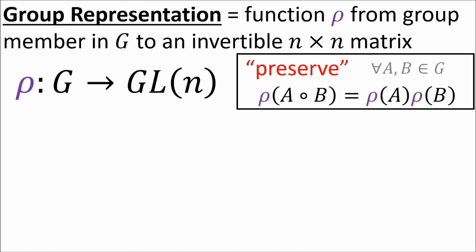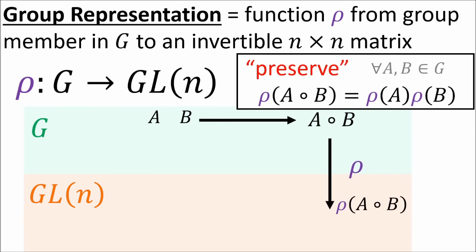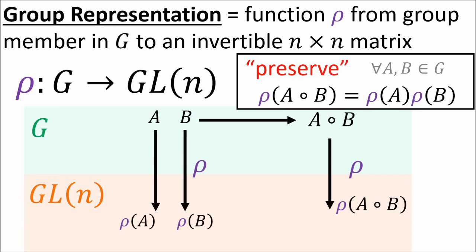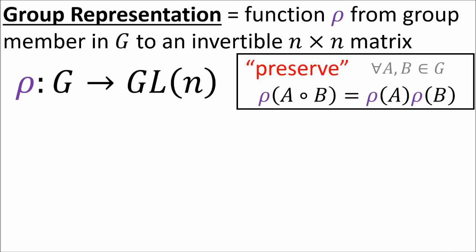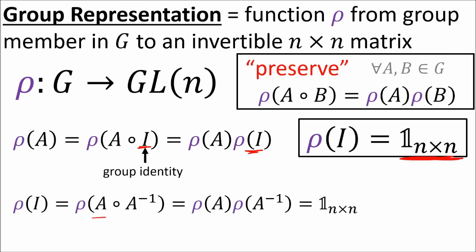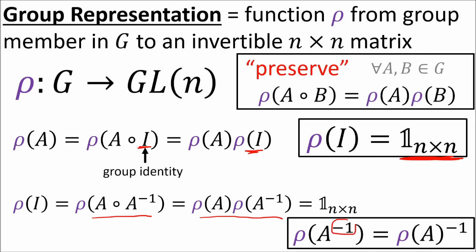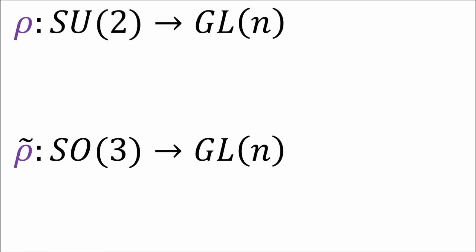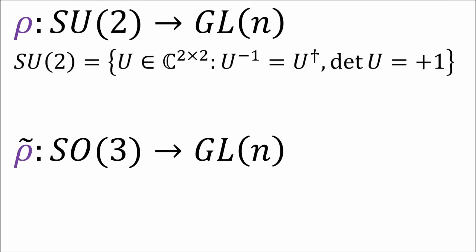In order to be a representation, this function rho must preserve the group operation for all members in the group. This means that combining two group elements and then getting its representation matrix is the same thing as getting the representation matrices for both group members and then multiplying the matrices. A consequence of this is that the group's identity element must be mapped to the n by n identity matrix, and group inverse elements must be mapped to the corresponding representation matrix's inverse.